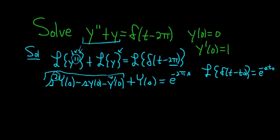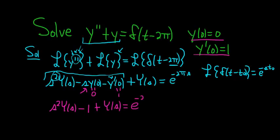All right, now we're going to impose or use or invoke our initial conditions here. We have to plug these in. So let's see. y of 0 equals 0. That's always good. And y prime of 0 is 1. So we have s squared big y of s minus 1, because all of this is 0, plus big y of s equals e to the negative 2π s.